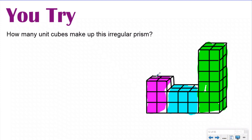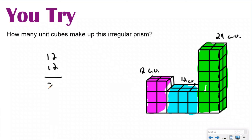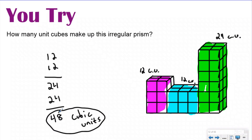Using the volume formula for each part: the purple section has an area of the base of four and three layers — four times three is 12 cubic units. The blue part has an area of the base of six and two layers — that's 12 cubic units. The green part has an area of the base of four and a height of six — four times six is 24 cubic units. Since volume is additive: 12 plus 12 plus 24 equals 48 cubic units total. You just followed the two steps — decompose the irregular prism and add the volumes back together.